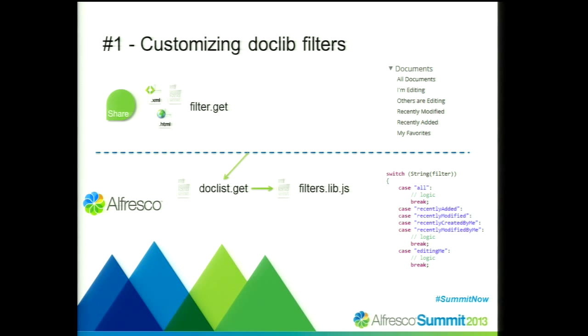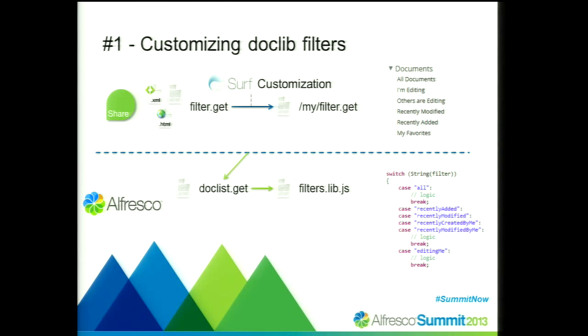The way this is set up makes it quite difficult to extend the document library with an additional filter for someone new to Alfresco, or for someone who wants to provide an extension module that does not interfere with any customer customizations. If you want to customize the document library filter, the first thing you have to do is modify the filter web script on the Share side to add your additional filter. Starting with Alfresco 4.0, you can do that with surf customization without impacting the original Alfresco source code file.